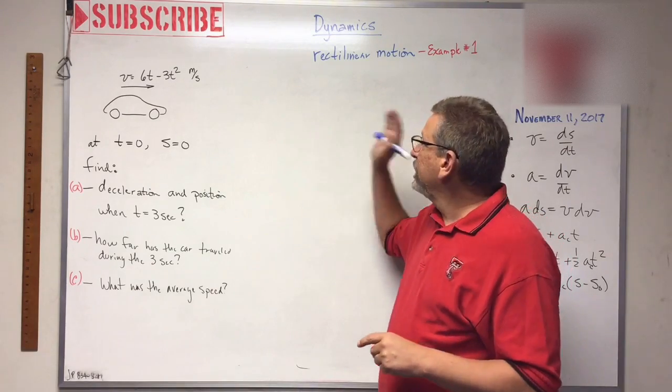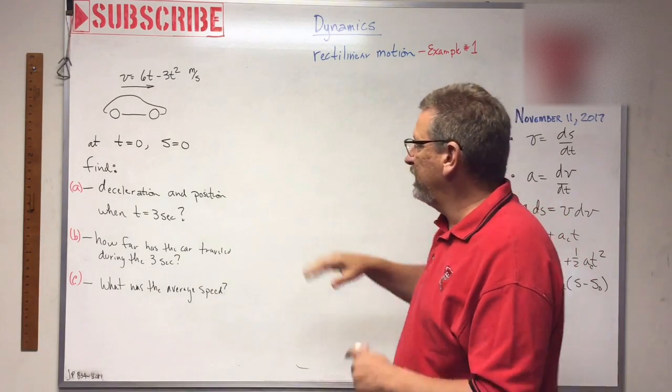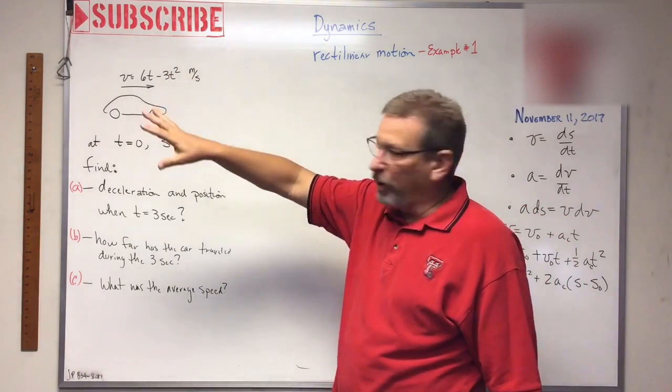Okay my friends, we're back again. Dynamics rectilinear motion example number one. We've got a car, I don't know, it could be a particle.